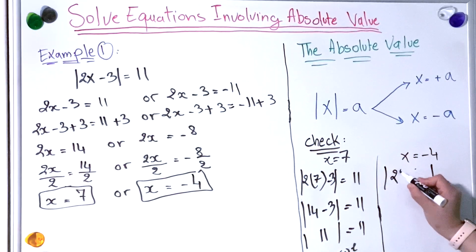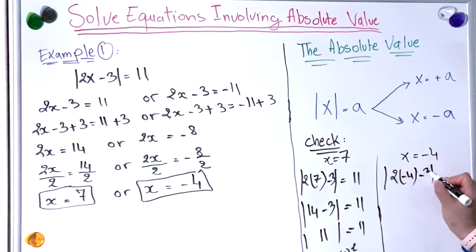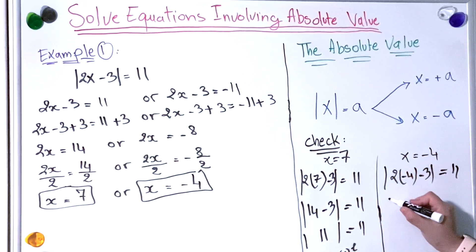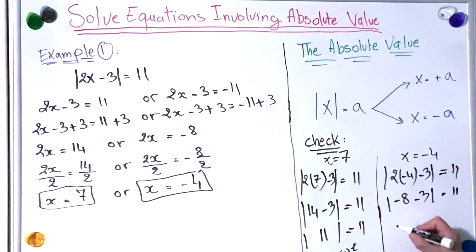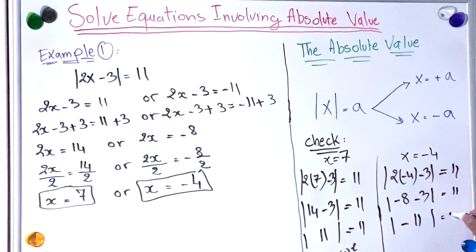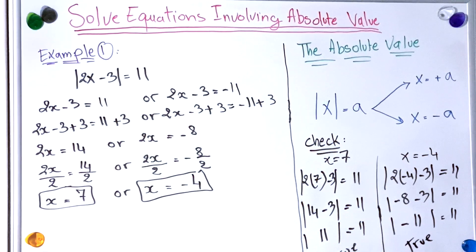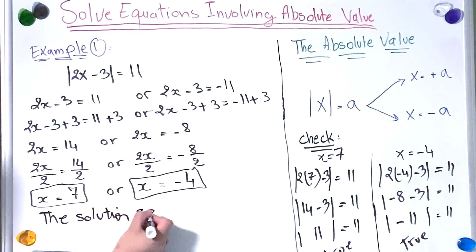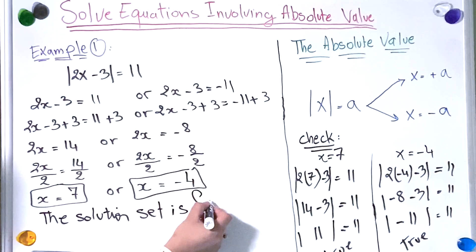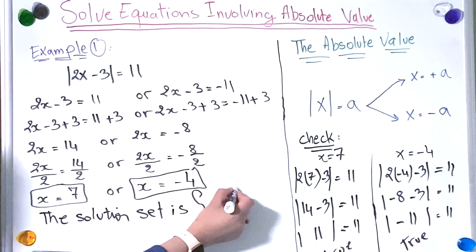Now we check x equal to minus 4. We have the absolute value of 2 times minus 4, minus 3, equal to 11. The absolute value of minus 8 minus 3 equals the absolute value of minus 11, which equals 11. That is true. So the solution set is {minus 4, 7}.